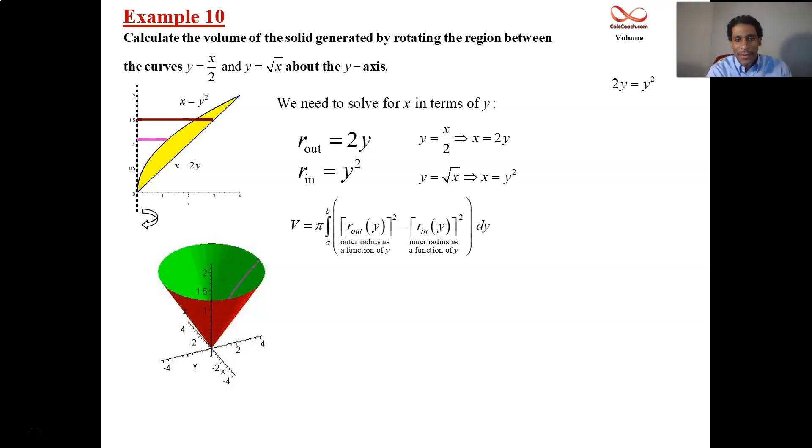Quadratic, so set it equal to 0. We have y squared minus 2y, so we factor that. And each one, either y is 0 or y minus 2 is 0.